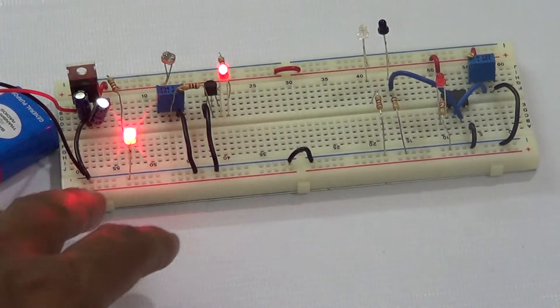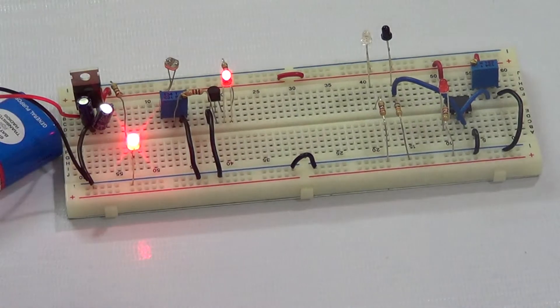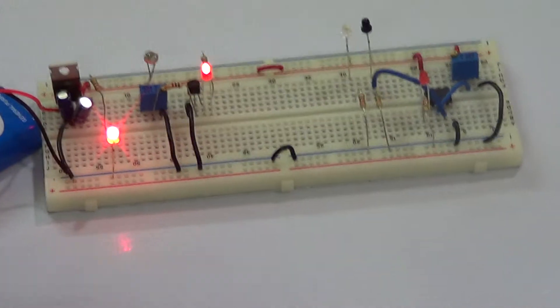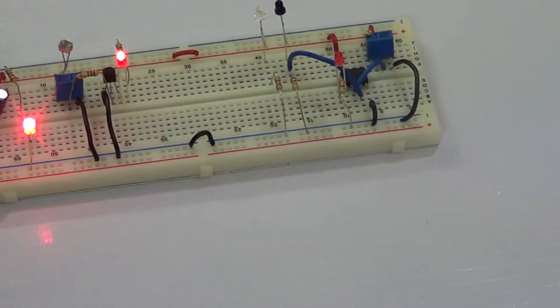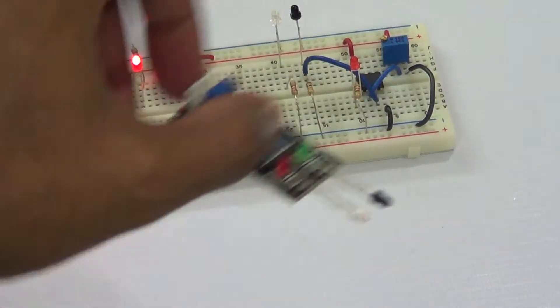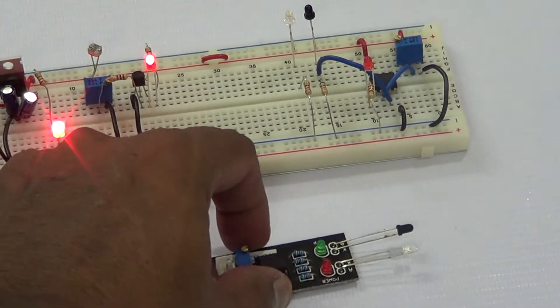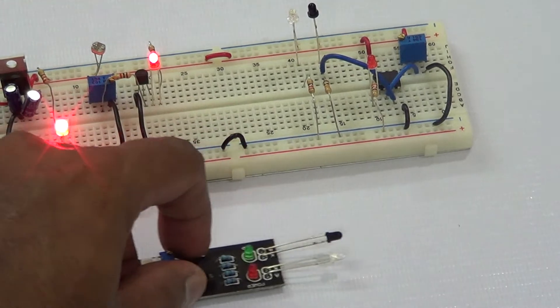And then once you do this you go on to build the IR sensor, the circuit for the IR sensor. We have an IR sensor here. So you will learn this is a sensor which we will be using in our robots. So you will learn how to build that all by yourself.